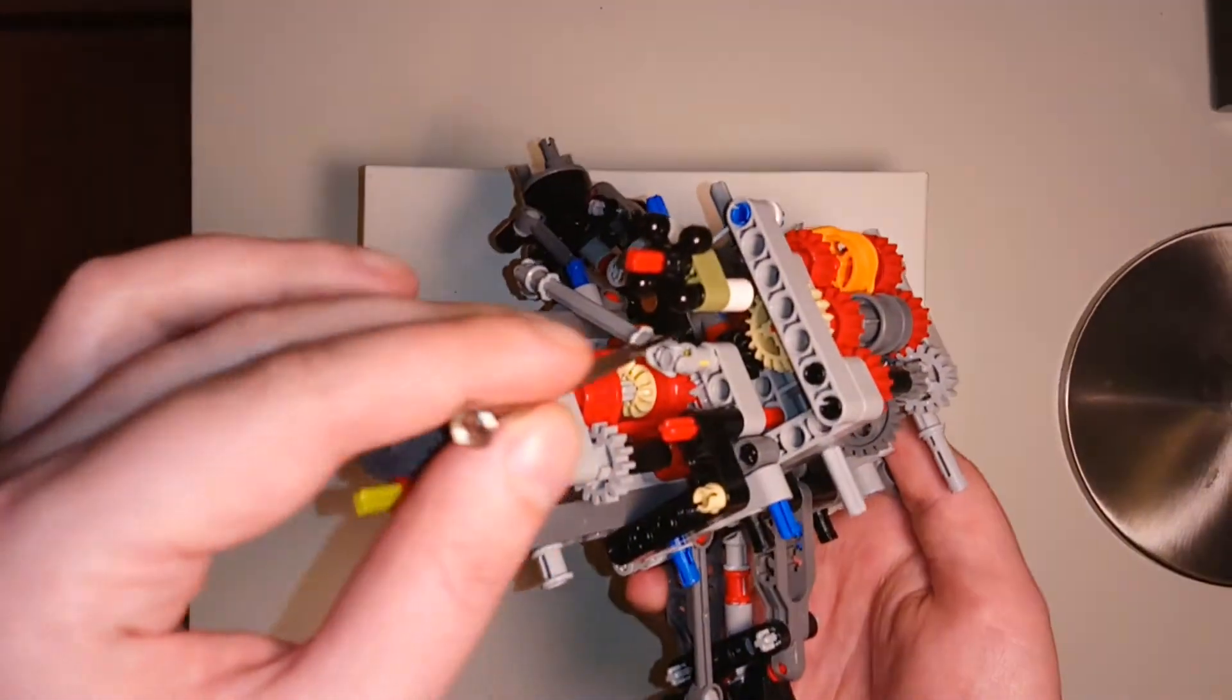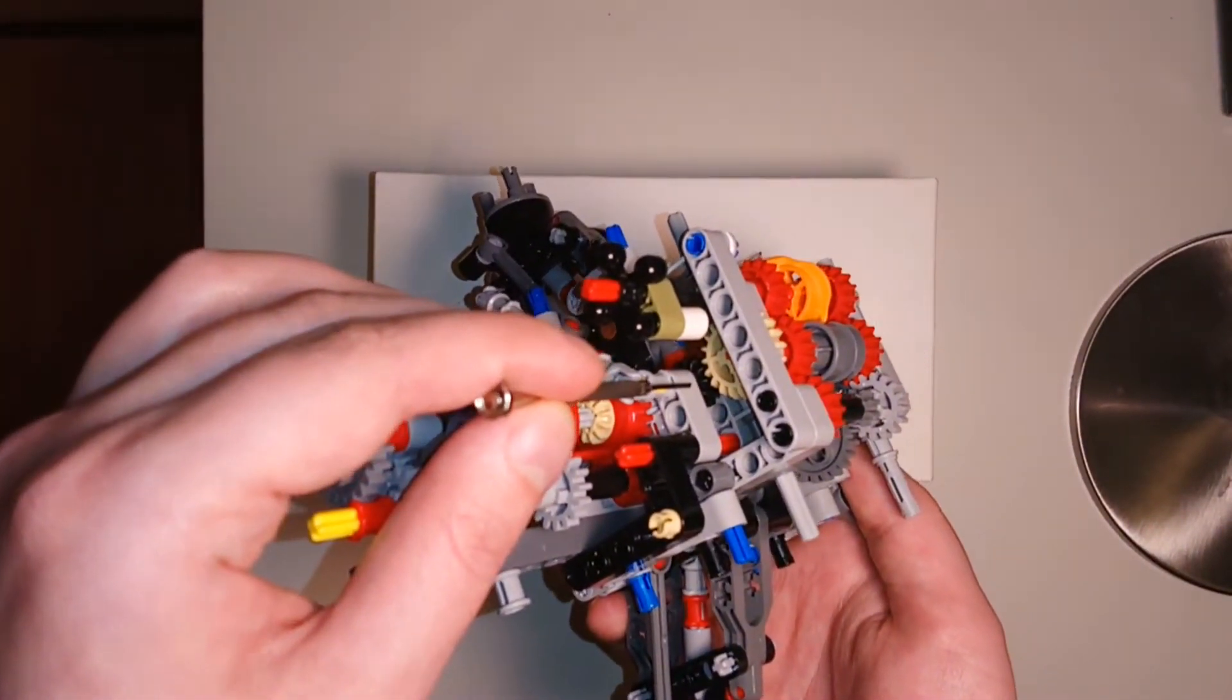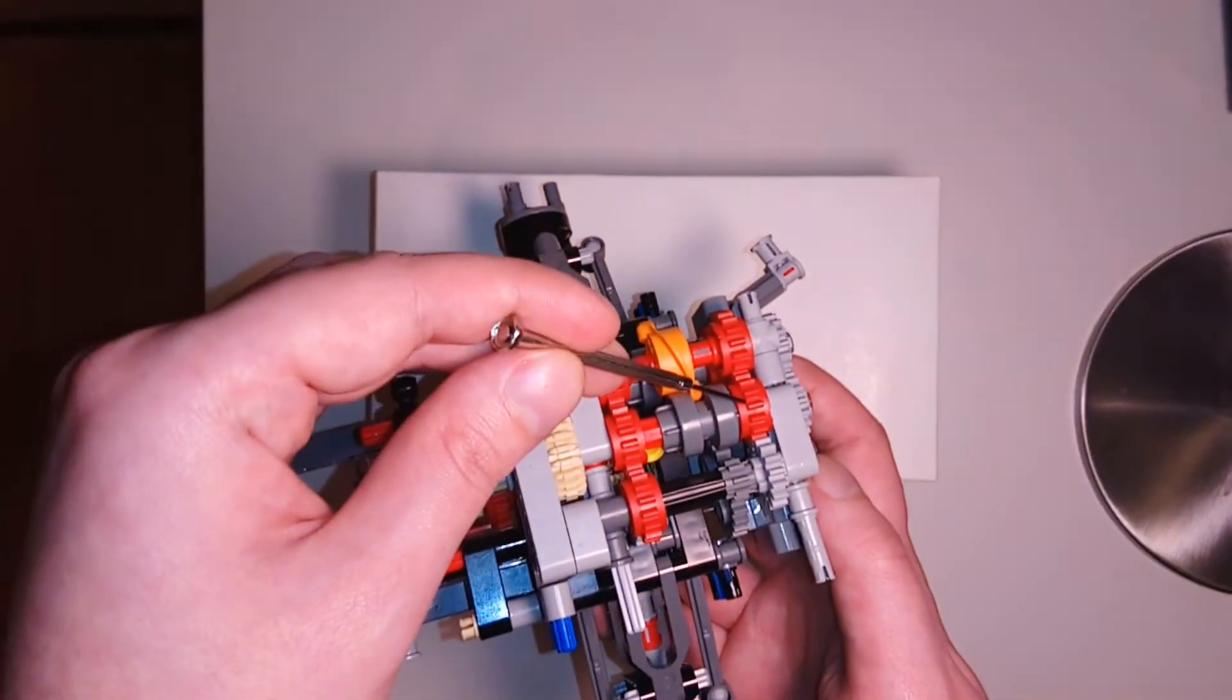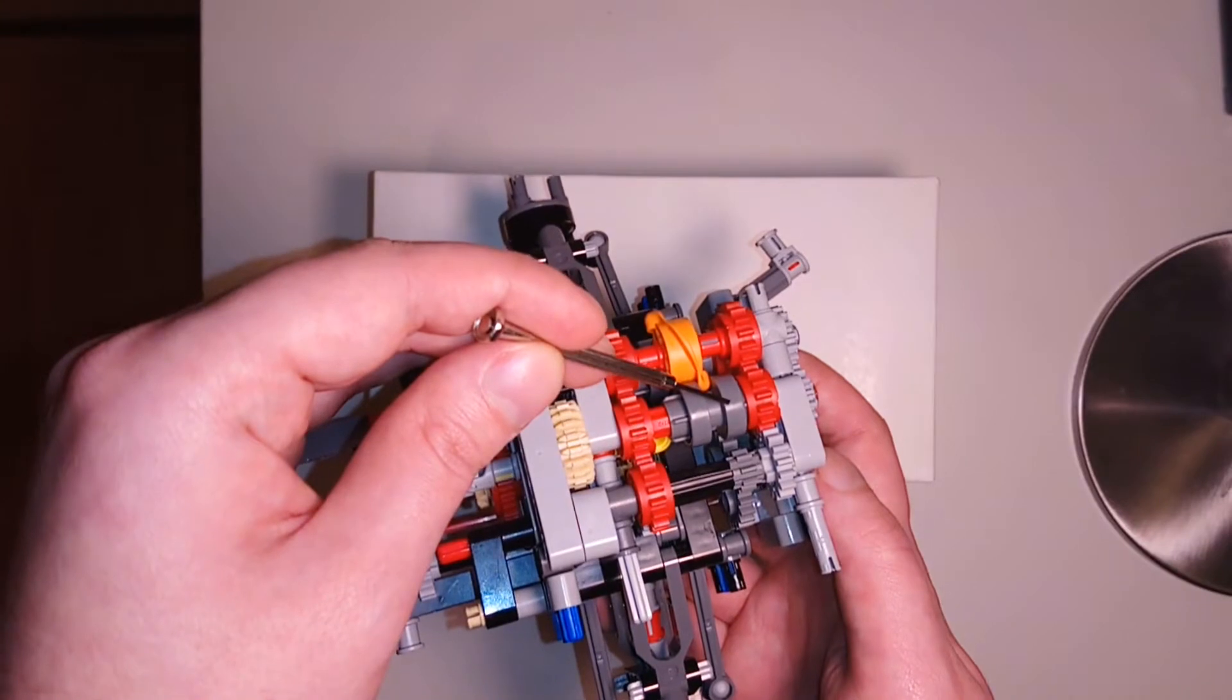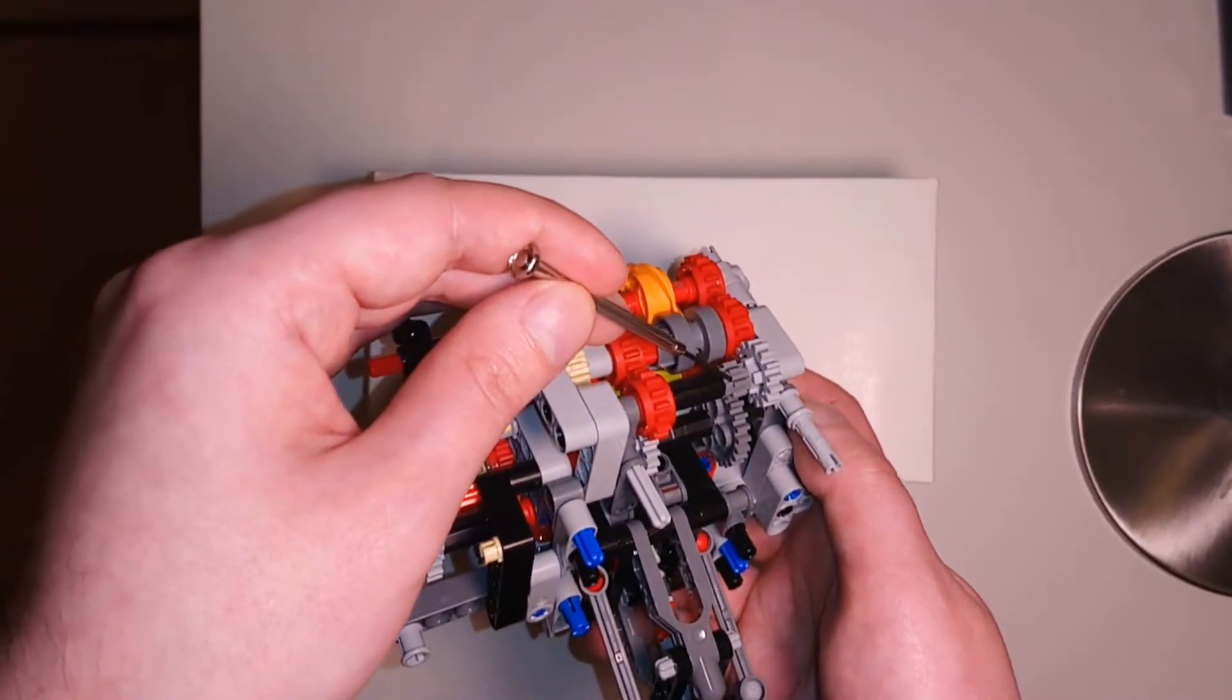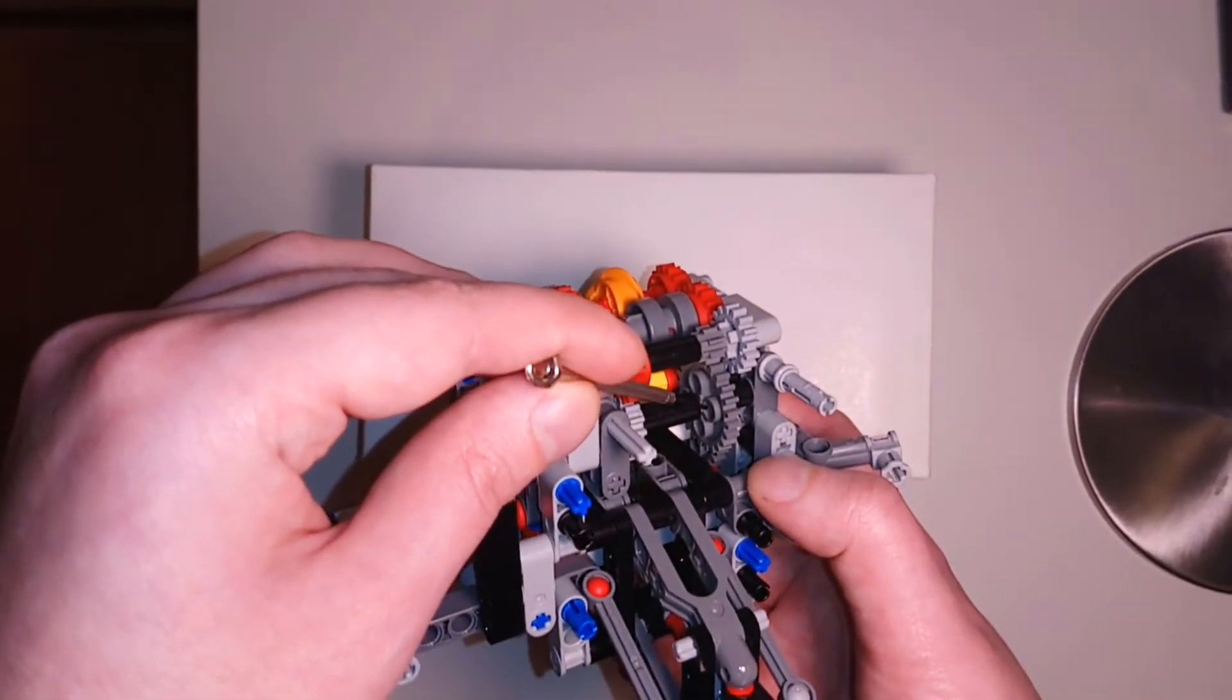The rotational input travels from this small black gear into the larger beige gear, down the middle to this red gear, which has been selected by the gear selector. Then into the gray gear, and to the tiny dark gray gear, and then into the largest dark gray gear.